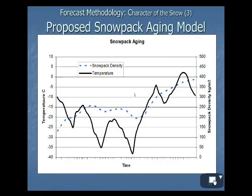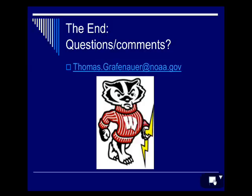The next slide shows the proposed snowpack aging model — basically the code Bagley will provide. As temperature increases, snowpack density increases. As temperature decreases, snowpack density may decrease a little bit as well, with some lag time. And since the Badgers are going to the Rose Bowl, I had to include Weather Bucky in the presentation. That is all I have.